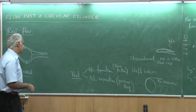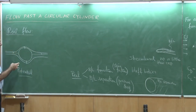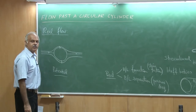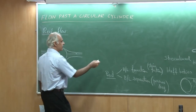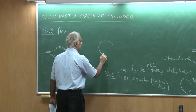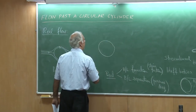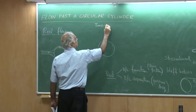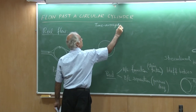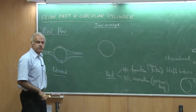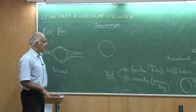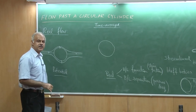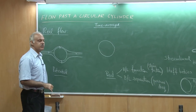We come back to the circular cylinder — this is obviously a bluff body. I have shown the potential flow and now I am going to show what happens in a real flow. I will draw a time-averaged picture. This leads to an unsteady flow where streamlines, pathlines, and streaklines would all be different and the flow would change with time.